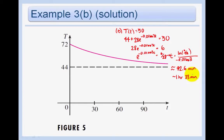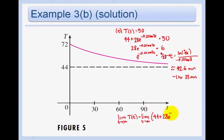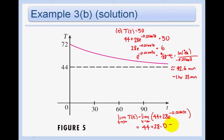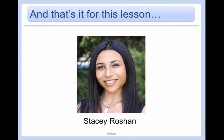Analyzing this, we see that the limiting temperature is 44°F. As t approaches infinity, T(t) = 44 + 28e^(−0.01663t) approaches 44 + 28×0 = 44. So the soda will approach the refrigerator temperature, which makes perfect sense. And that's it for our final section.